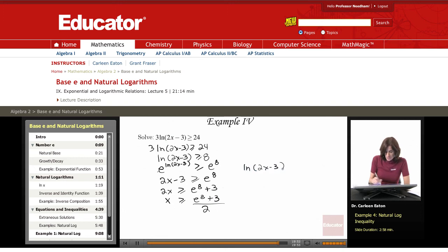Let's check ln(2x - 3). Let x = (e^8 + 3)/2. If this is okay, the whole solution set is okay. This gives me ln[2 · (e^8 + 3)/2 - 3].